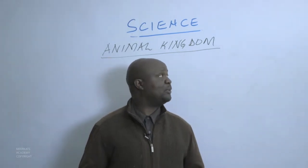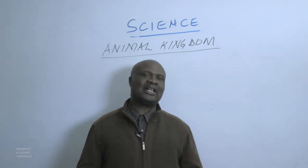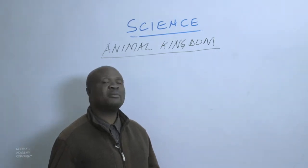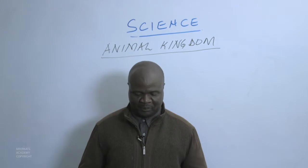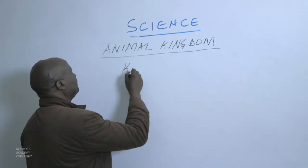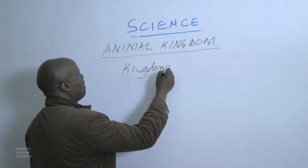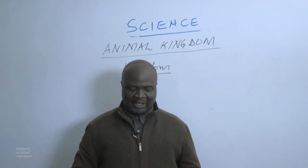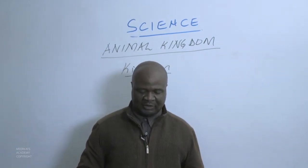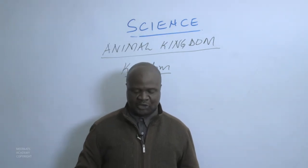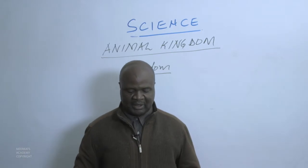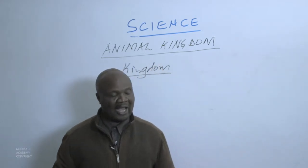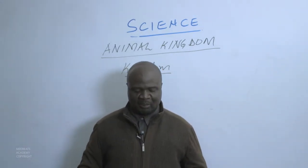One group we are going to deal with is called the animal kingdom. We shall see how far the taxonomists have gone to classify the organisms present in the animal kingdom. Kingdom is the first level of classification that sorts living things into a smaller number of groups, and each group has a very large number of organisms that share important characteristics.